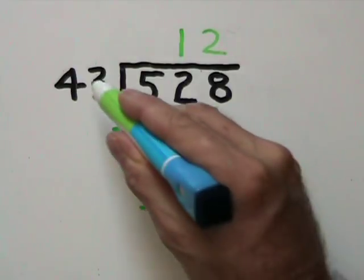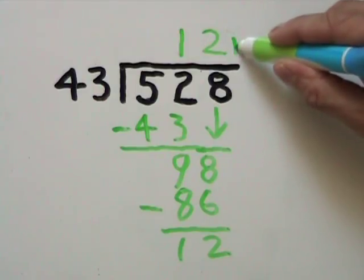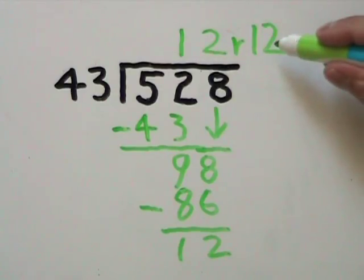Since 12 is less than our divisor of 43, 12 will be our remainder. And this gives us a final answer of 12 remainder 12.